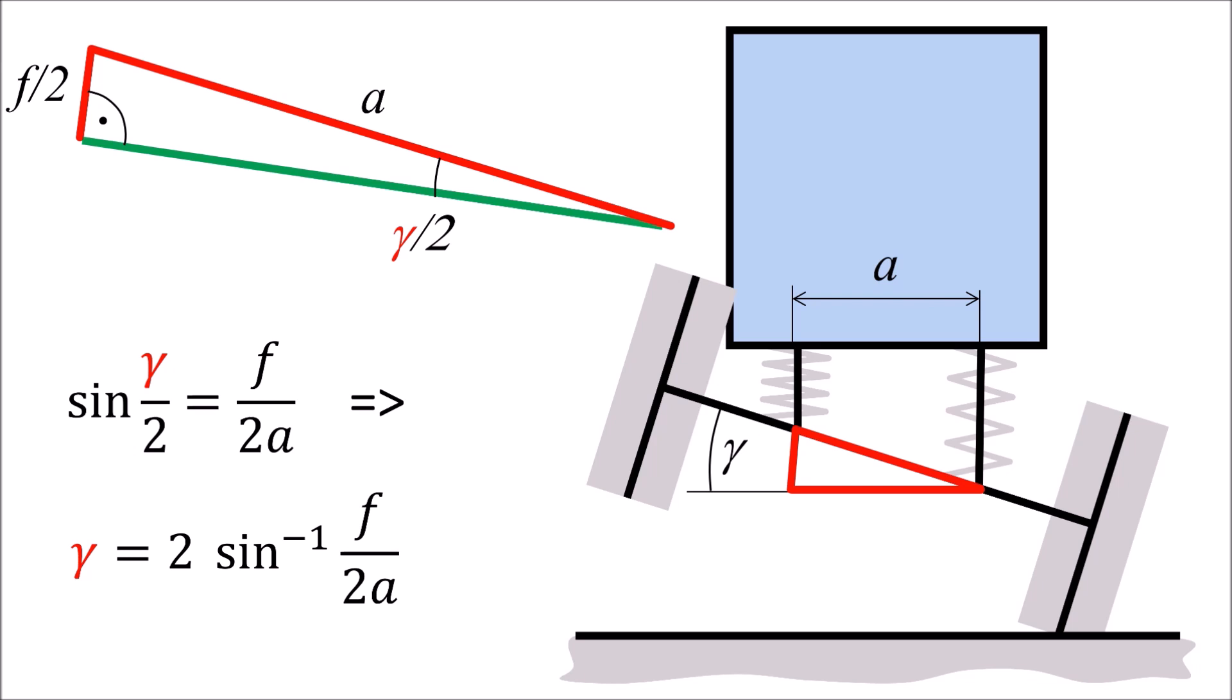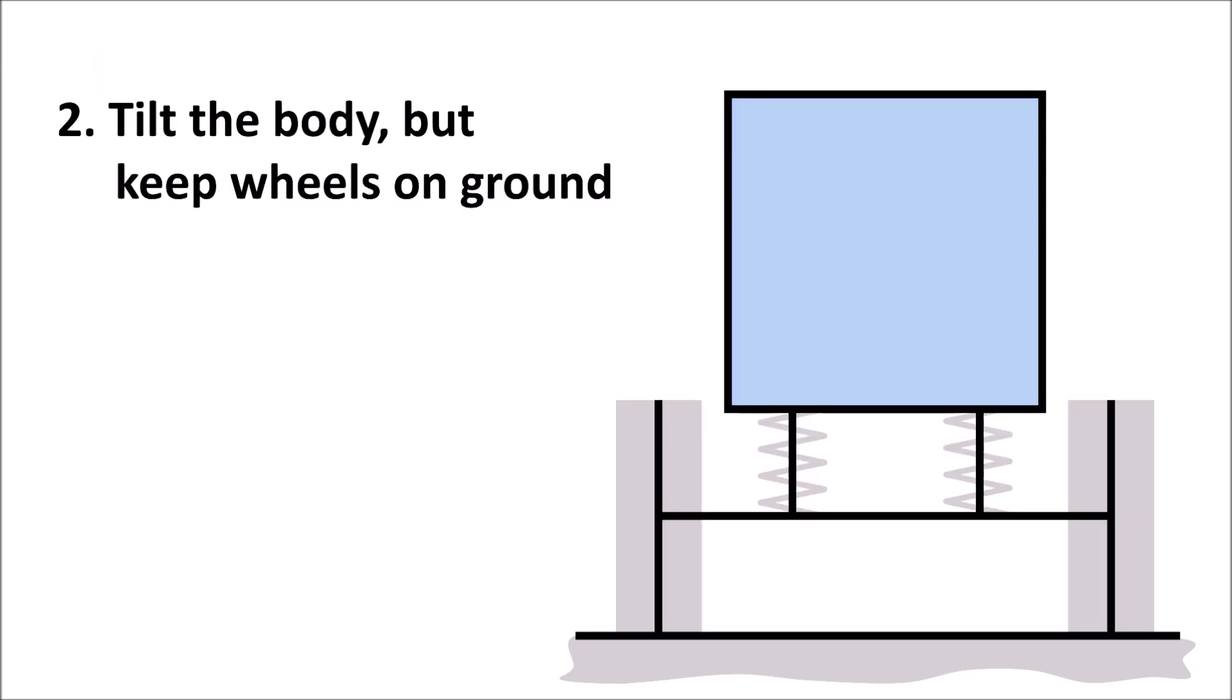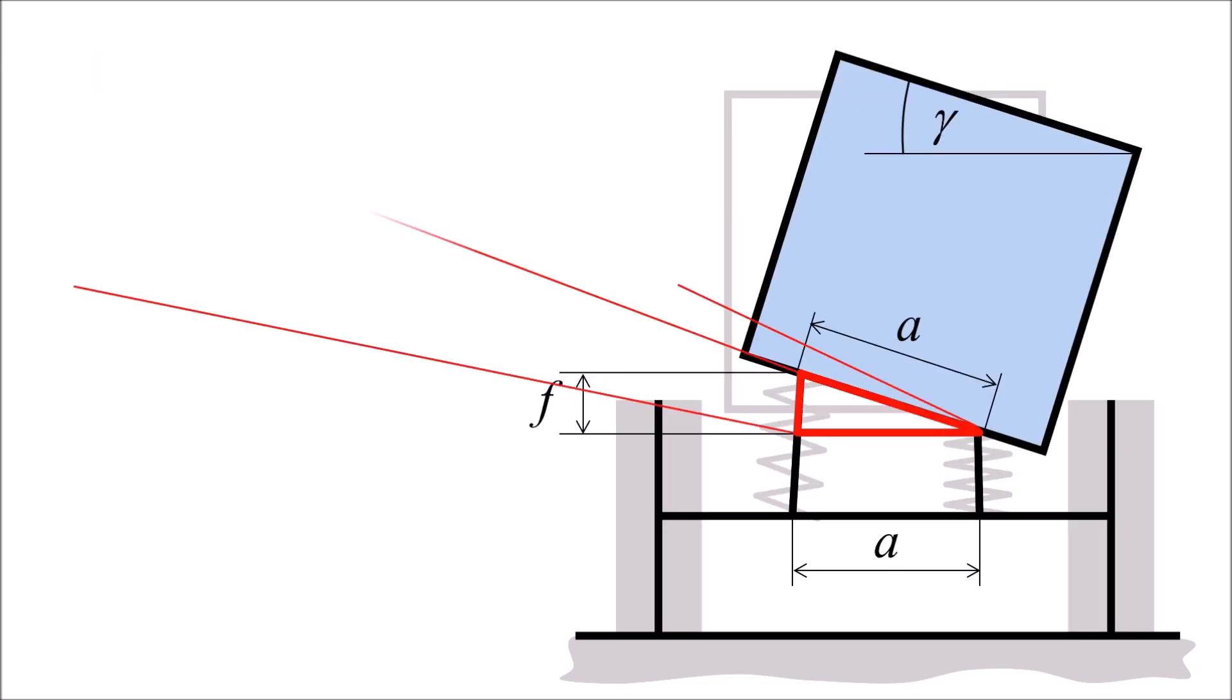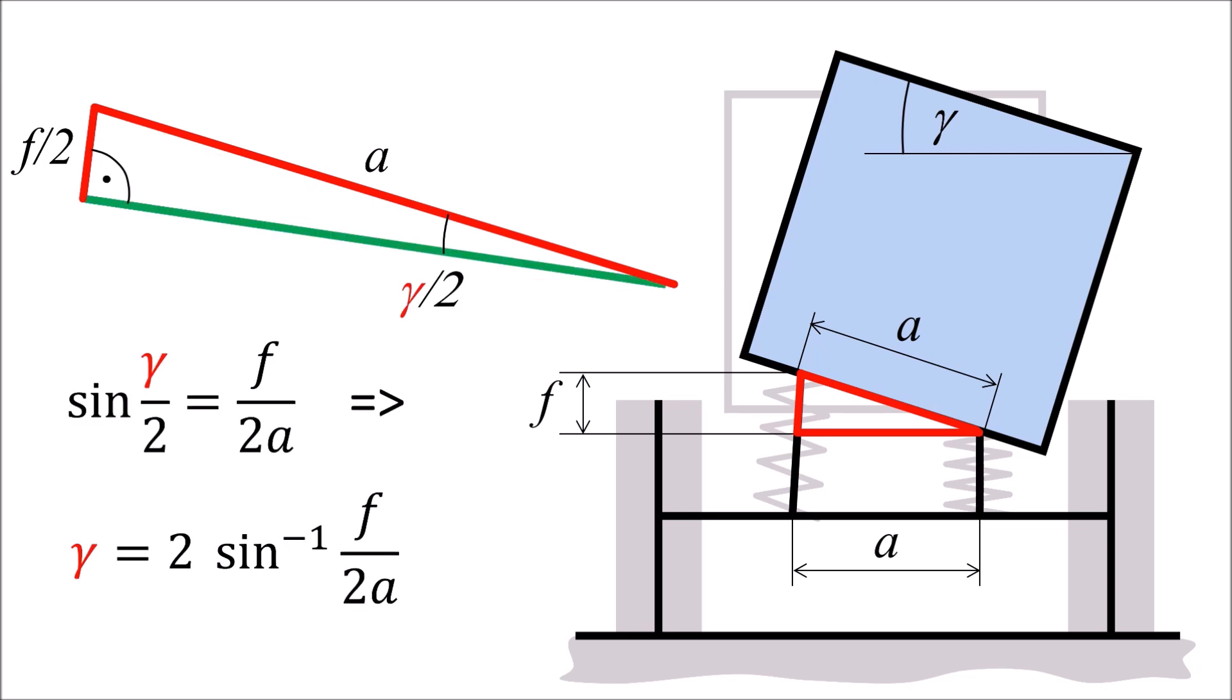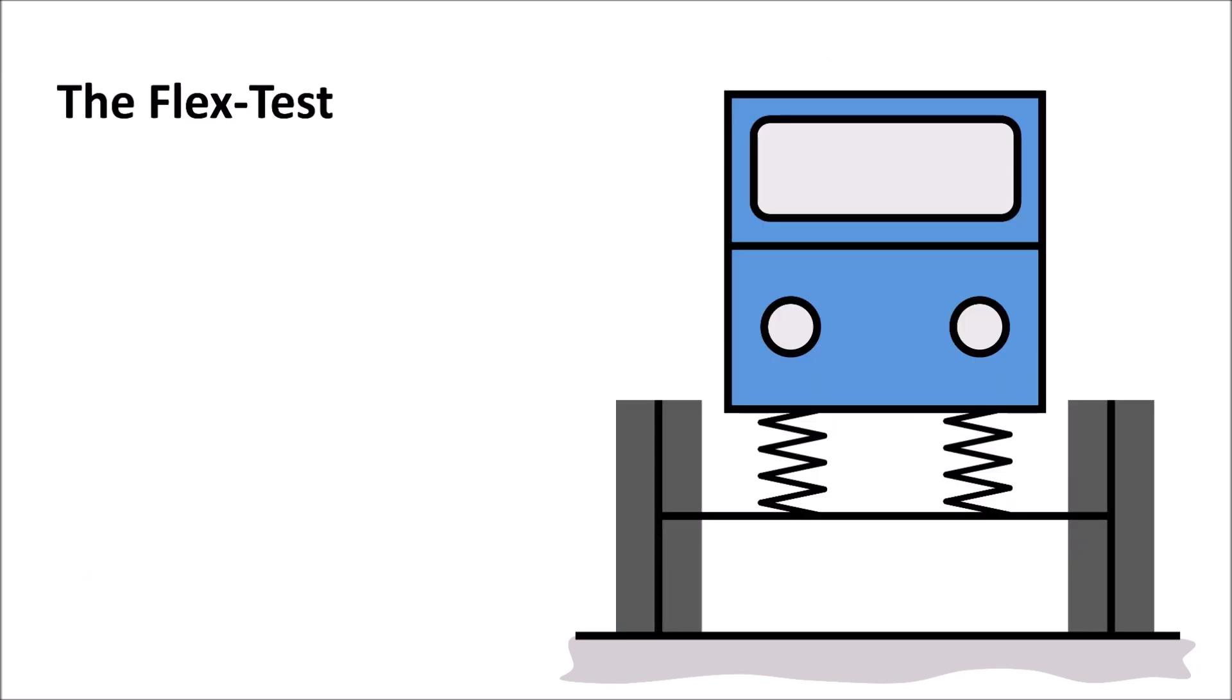In the second case, we now tilt the body while keeping all wheels on the ground. This yields to the same rectangular triangle in which we can express gamma in the same way as before. Now let's simulate a flex test.